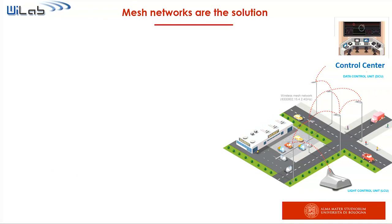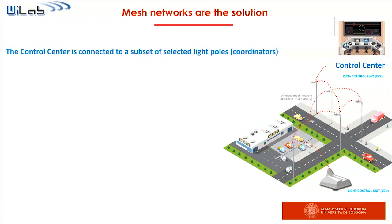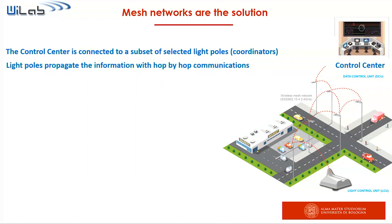The solution in this case is the adoption of a mesh network. The control center is connected not to all light poles, but to a subset of selected light poles — those that experience good propagation conditions. These light poles are the coordinators. When a coordinator receives the command from the control center, it propagates the command toward its neighbors, and the neighbors to their neighbors, and so on. The command propagates hop by hop. Since the light poles are close to one another, they experience good propagation conditions and have line of sight, so we do not have coverage problems.